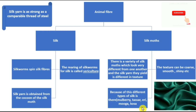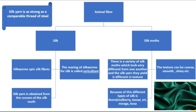Because of these differences, there are different types of silk: mulberry silk, tassar silk, eri silk, muga silk, and kosa silk. An important fact: silk yarn is as strong as a comparable thread of steel — like the wire netting you see in windows — so you can imagine how strong silk yarn is.